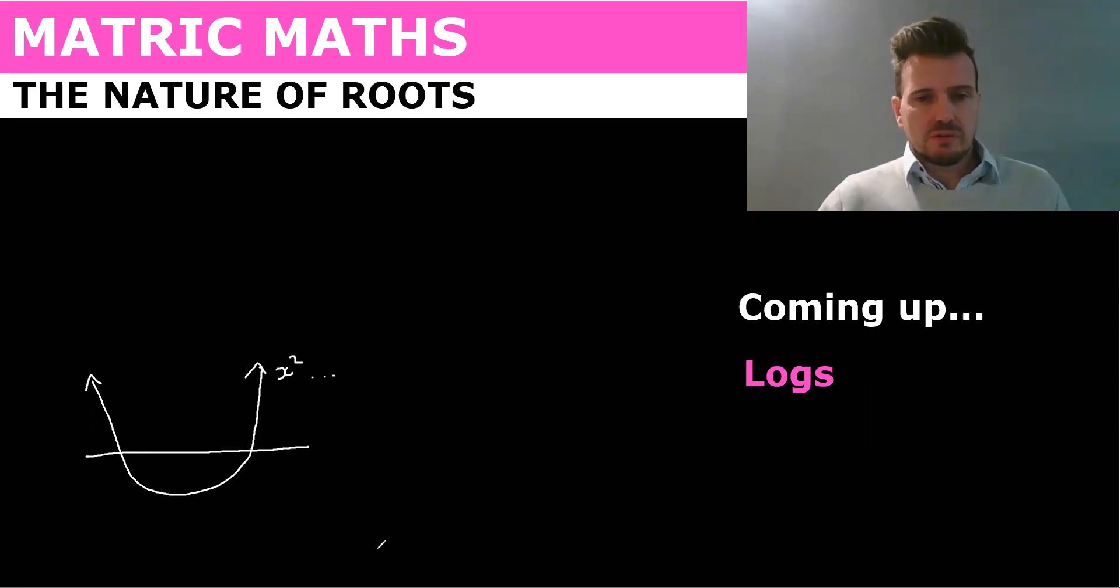A parabola. So this would be an x squared graph. Now if we look at this graph, we have two roots, two roots here.